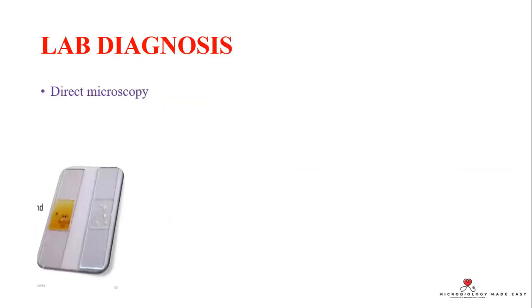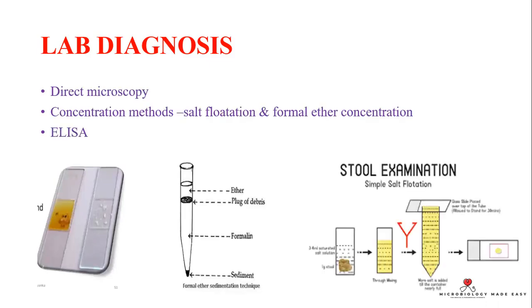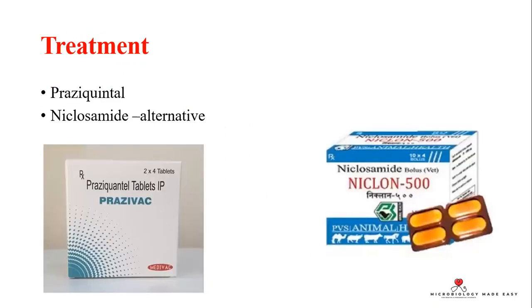For lab diagnosis, the sample is a stool sample. First, perform wet mount direct microscopy. If nothing is found, proceed to concentration techniques: salt flotation — where eggs float to the surface — or formal ether concentration technique, where eggs are found in the sediment and examined under a microscope. ELISA is also a recent advanced method for detection of H. nana.